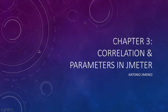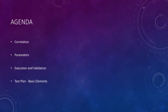Hello and welcome to the JMeter channel. This is chapter number three: correlation and parameters in JMeter. My name is Antonio Jimenez and this is the agenda for today. First we're going to cover the basics of correlations, then we're going to use these correlations to get parameters, then we're going to execute the script and validate that everything is working as expected, and finally we're going to take a look at the test plan basic elements that we are going to use in this script to make it work.